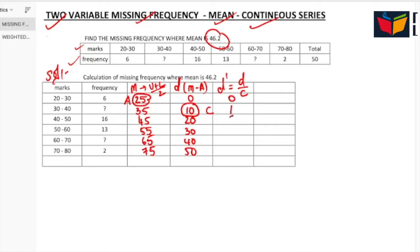Now F into D complement. 6 into 0 is 0. Now we don't have frequencies here, so I'm considering as F1. F1 into 1 is F1, 16 into 2 is 32, 13 into 3 is 39. Here second frequency is missing, F2. F2 into 4 is 4F2, 2 into 5 is 10. Calculate these F into D complement.